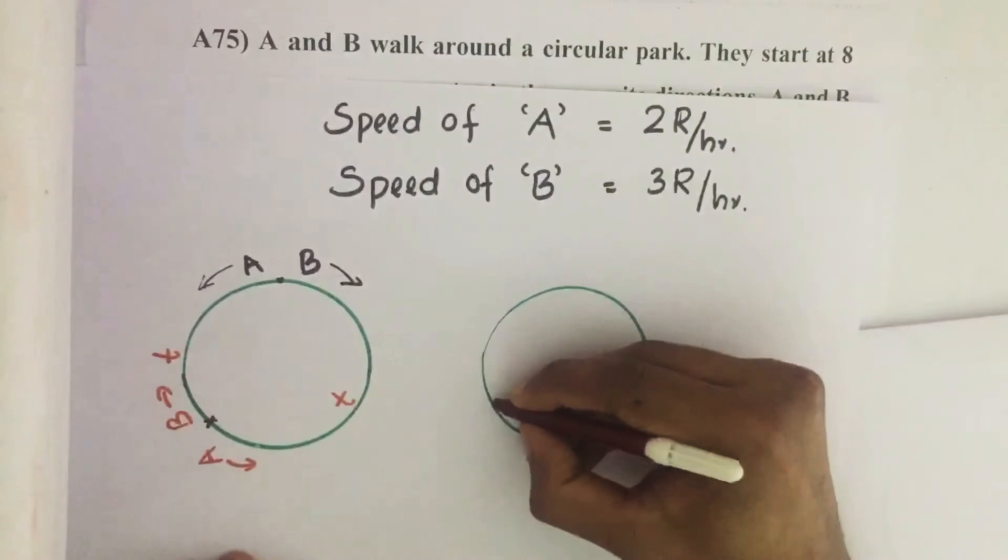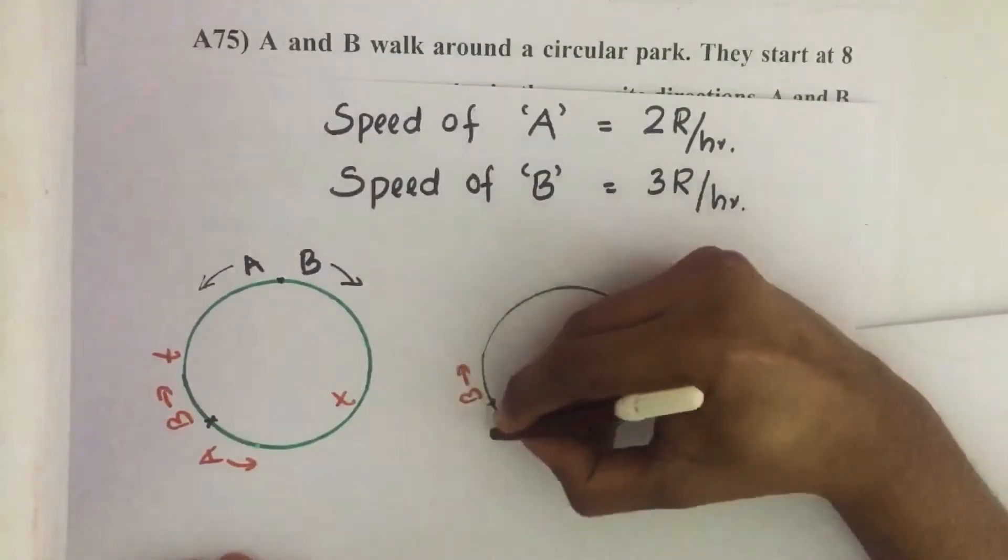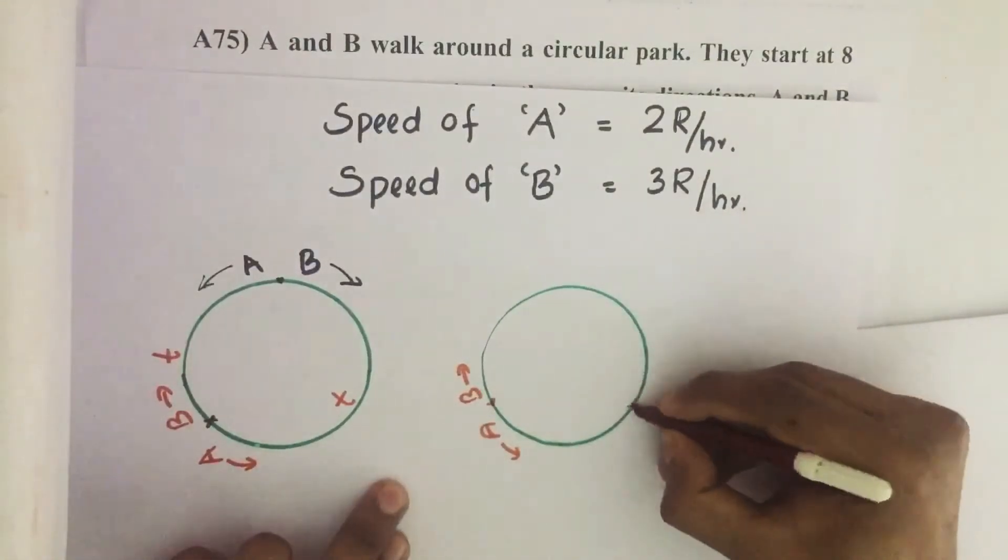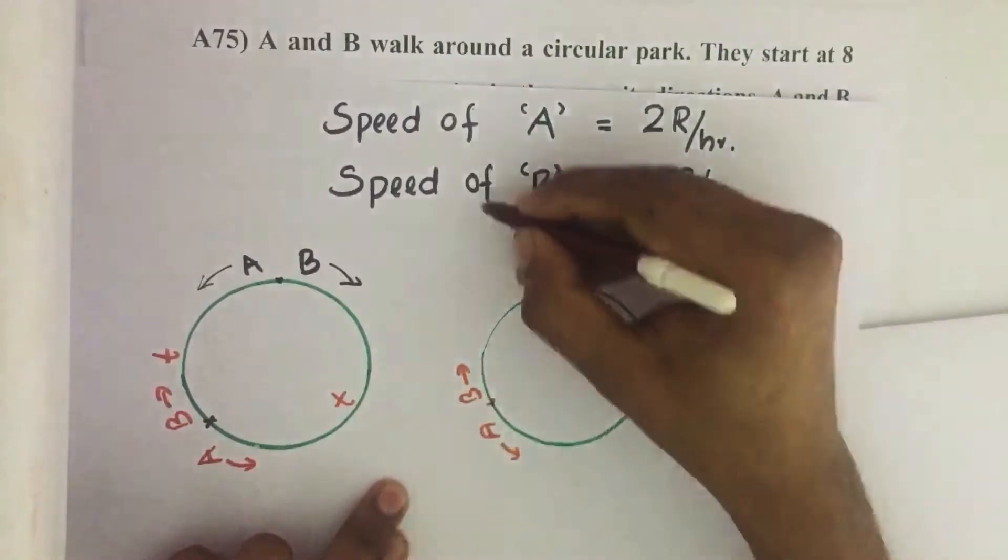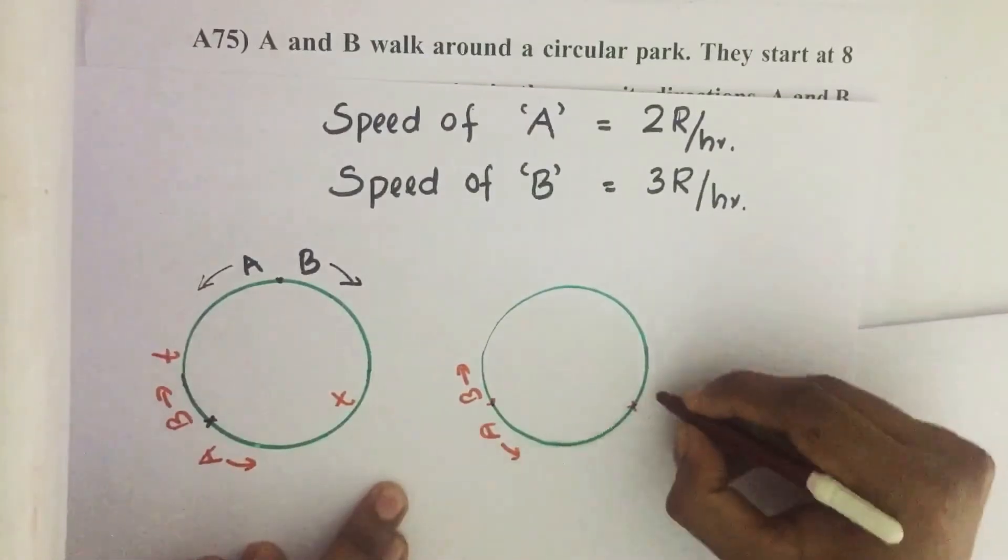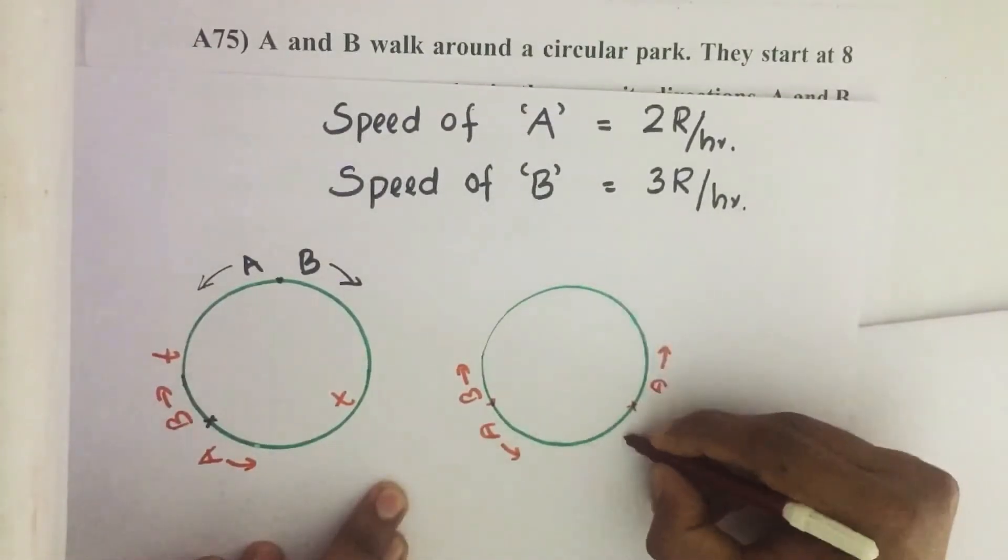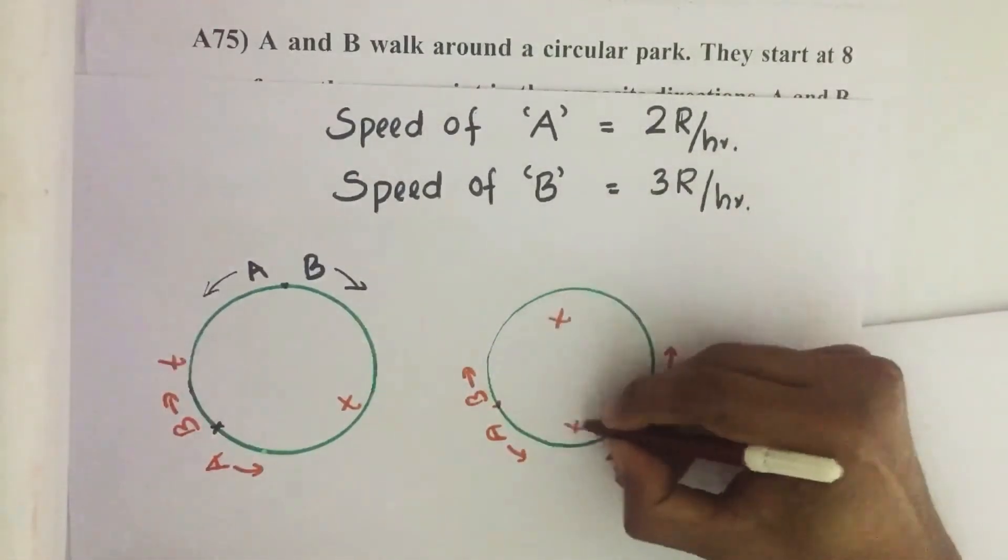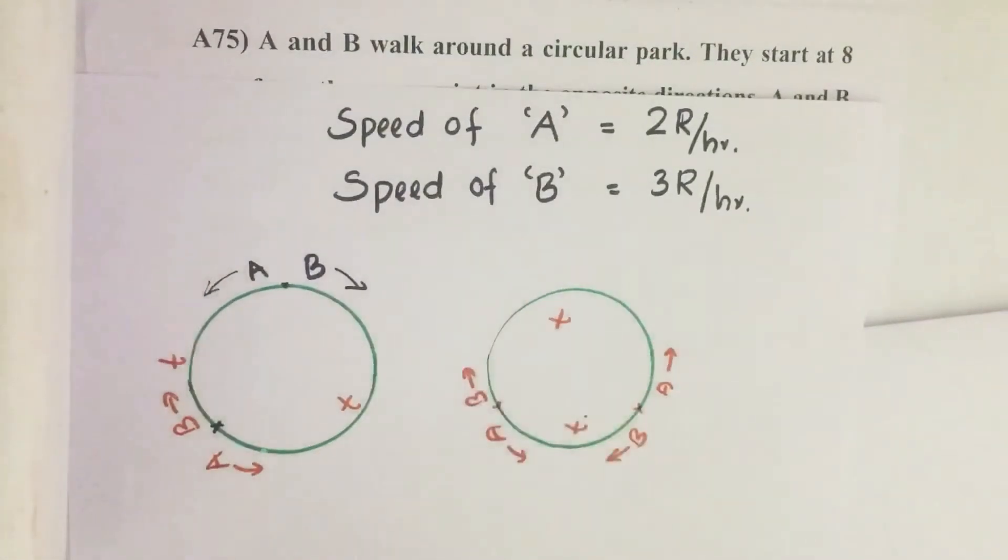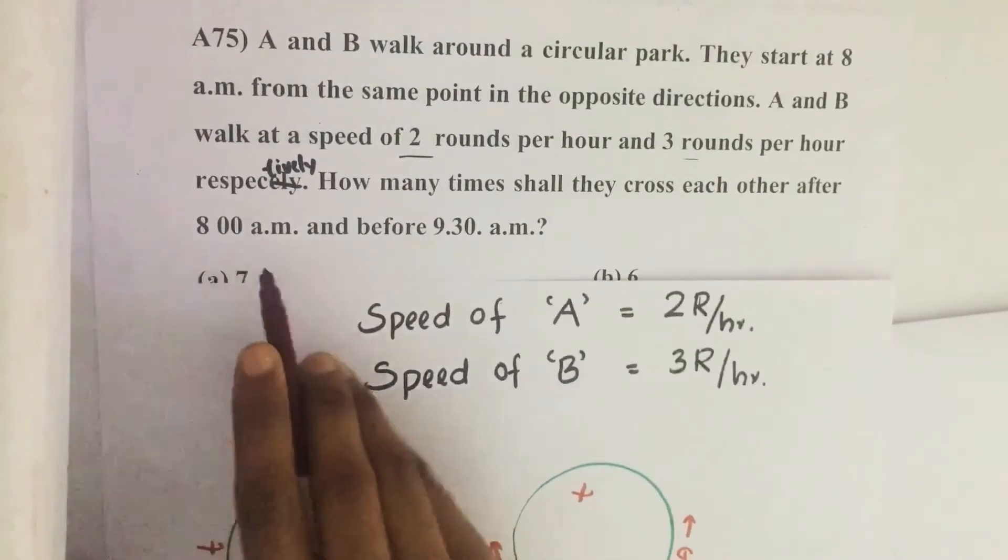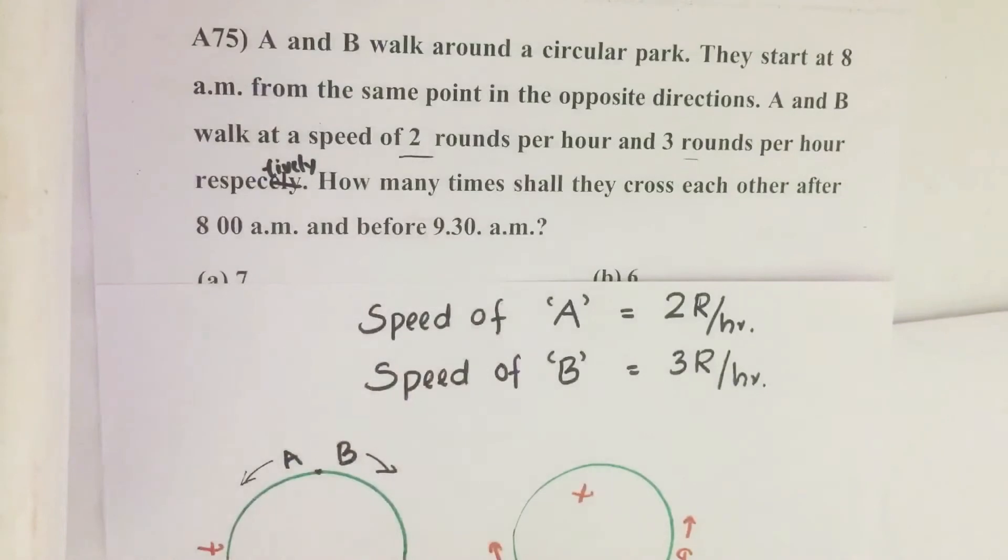Then again from here after travelling T distance they will meet somewhere around here because B can walk more distance than A. So again they will meet somewhere around here after T interval. If you know this T time interval, then how many such T intervals are there between 8am and 9:30am? That will be our answer. So how to find this T?